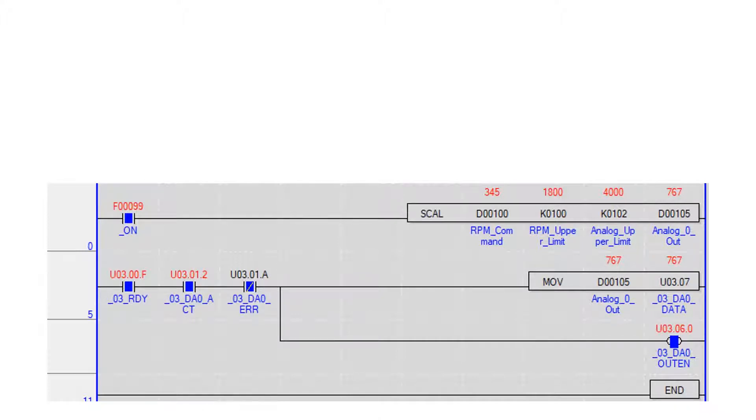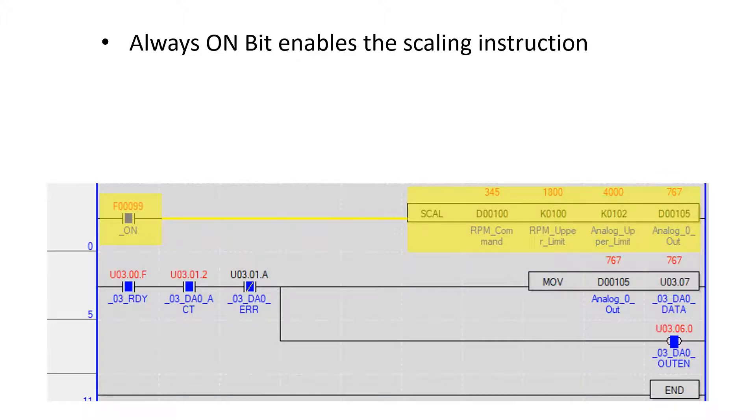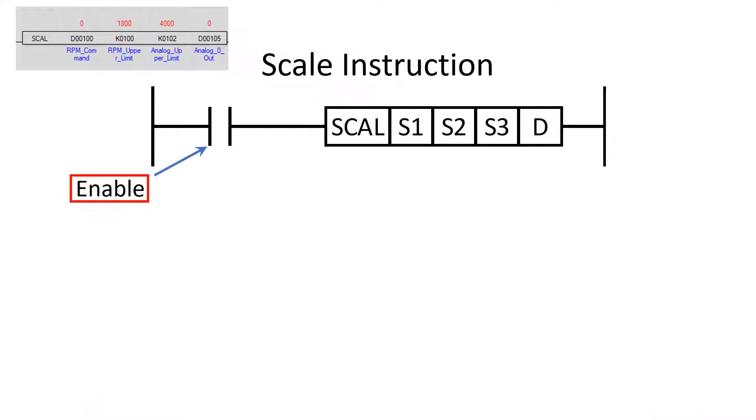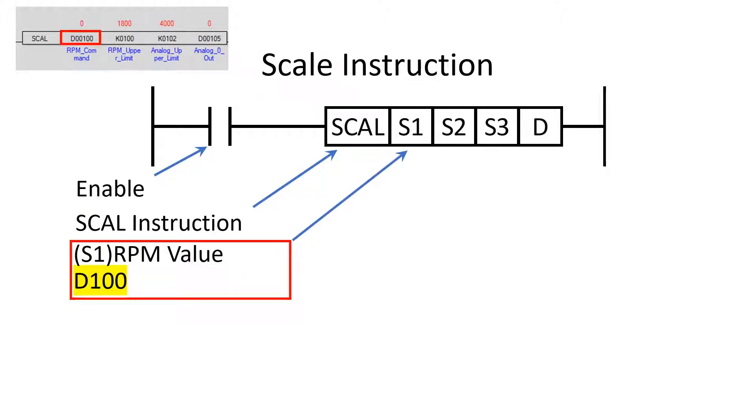In this example, the always on bit enables the scaling instruction. An enable condition is required when using the scale instruction. This program uses the SCAL instruction. Operand S1 stores the speed command data. In this program it is memory location D100. The PLC received this data from the operator interface.